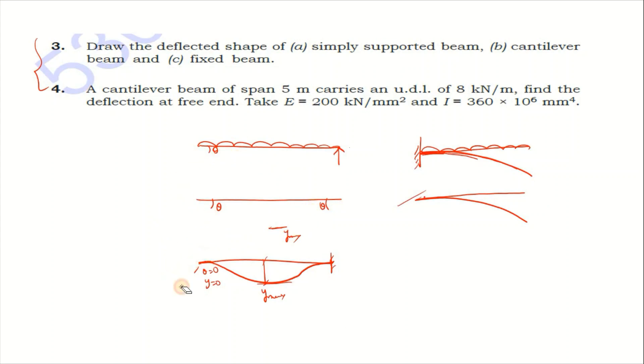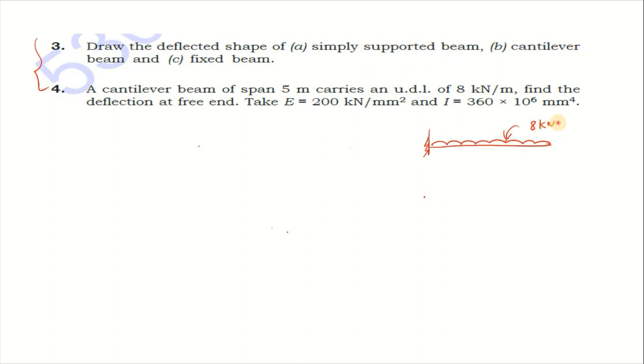Next, a cantilever beam of span 5 meters carries a UDL of 8 kilonewton per meter. Find the deflection at free end. Maximum deflection formula is WL⁴ by 8EI.